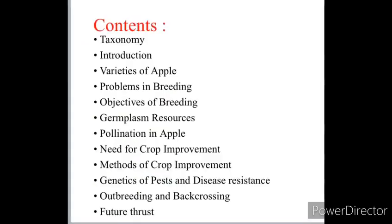The contents are as follows: Taxonomy, Introduction, Varieties of Apple, Problems in Breeding, Objectives of Breeding, Germplasm Resources, Pollination in Apple, Need for Crop Improvement, Methods of Crop Improvement, Genetics of Pests and Disease Resistance, Outbreeding and Backcrossing, and Future Thrust.